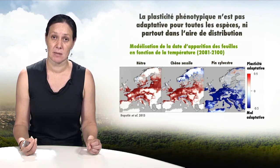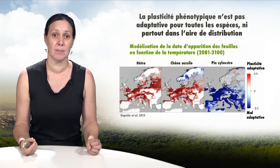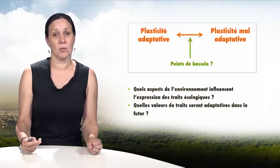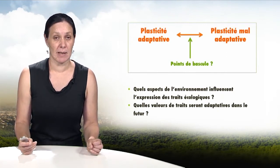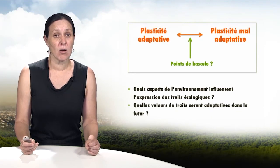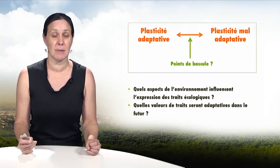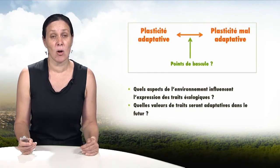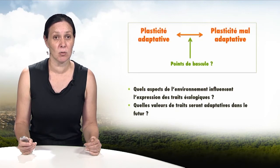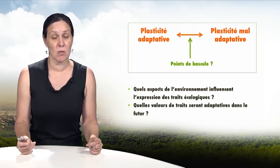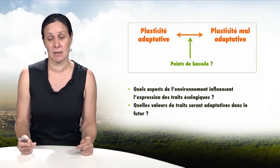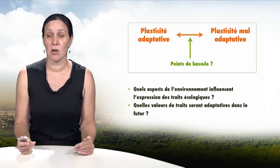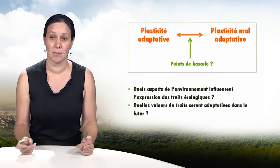In blue are areas where the change in leaf emergence dates based on temperature will compromise species survival. For beech and oak, phenotypic plasticity allows adaptation to future climate change and improves their fate, except in the colder areas. On the contrary, for pine, the change in temperature compromises its adaptation, except in the coldest areas. Phenotypic plasticity may be adaptive under today's environmental conditions and become maladaptive in future conditions. Understanding where, how, and for what species phenotypic plasticity becomes insufficient or aggravates the fate of species is a major challenge.